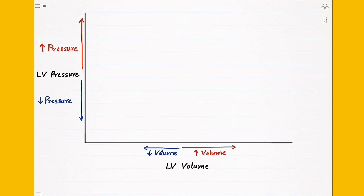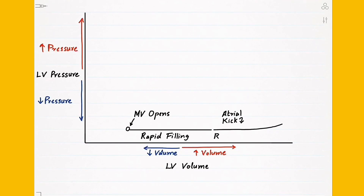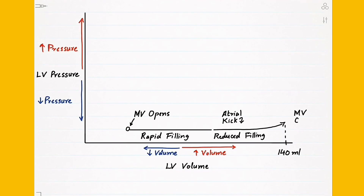The cardiac cycle for the left ventricle begins with the opening of the mitral valve. As soon as the mitral valve opens, blood starts flowing into the left ventricle, increasing the volume inside. Initially we get the passive rapid filling phase, and later when the left atrium contracts giving the atrial kick, we get the reduced filling phase. Notice how the graph moves towards the right on the x-axis because we are filling and increasing the volume of the left ventricle. After filling to 140 ml, the mitral valve closes.